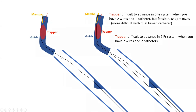You need to know how to use the trapper because size is an issue. A trapper is difficult to advance in a six French system when you have two wires and one catheter, but it is feasible. There is enough room in a six French guide, but it is very tight, so you will meet a lot of resistance.